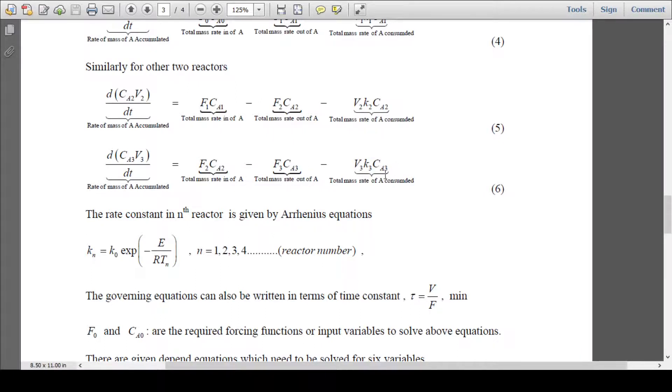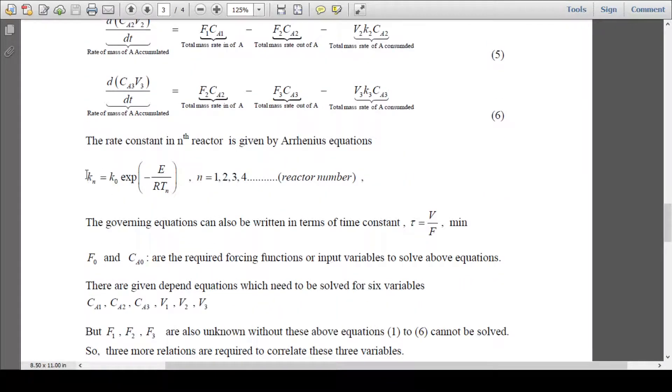K1, K2, K3 are rate constants that can be calculated from Arrhenius equations: Kn equals K0·exp(-E/RTn), where n equals 1, 2, 3 for reactor numbers. Time constant can be calculated by V/F in minutes.